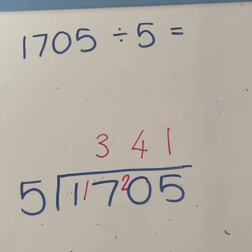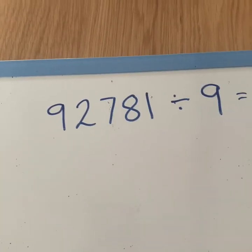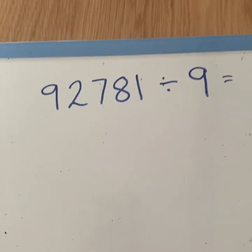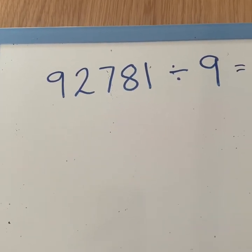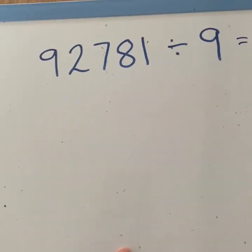I went through that quite fast. So I'm going to do a few more examples. So now I'm going to do another example. We've got a longer number here. We've got 92,781 divided by 9.